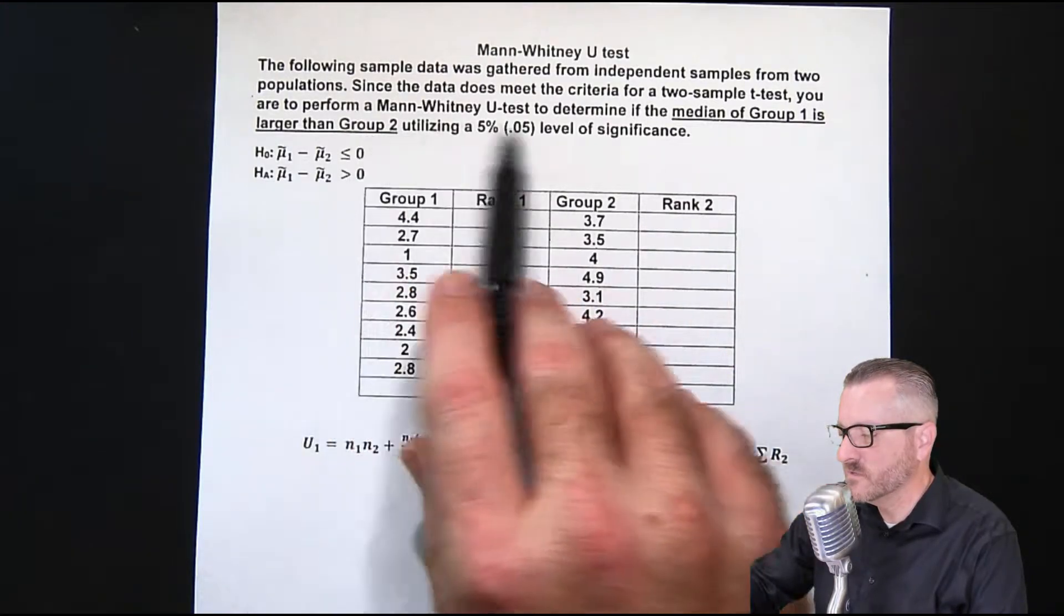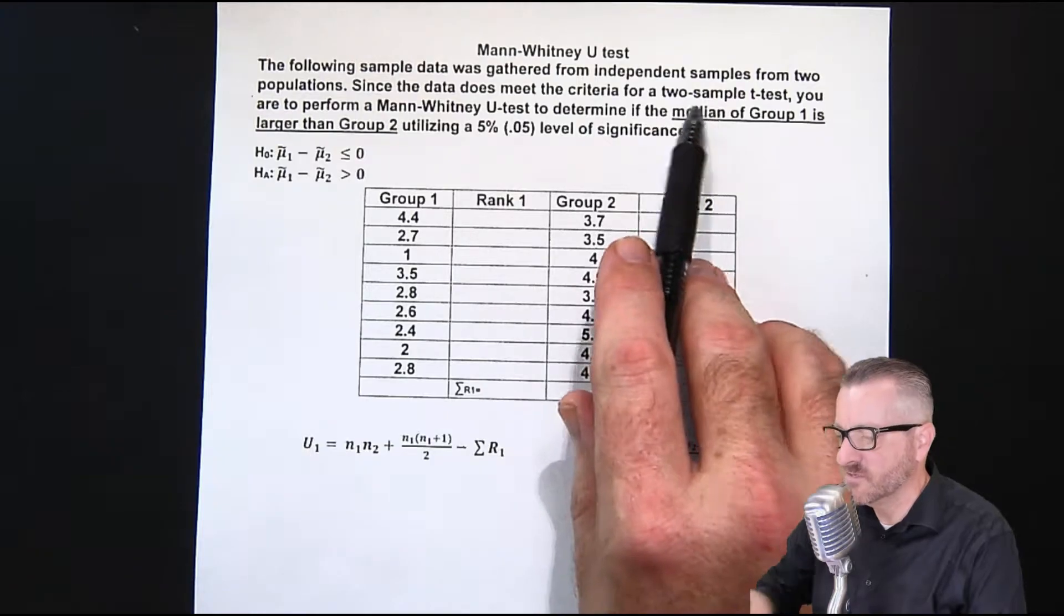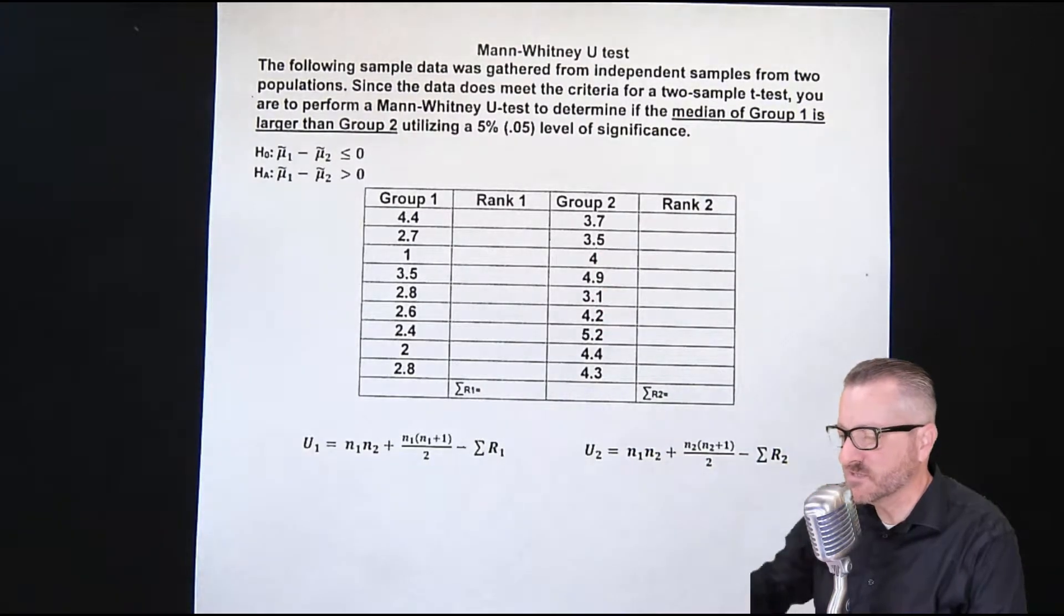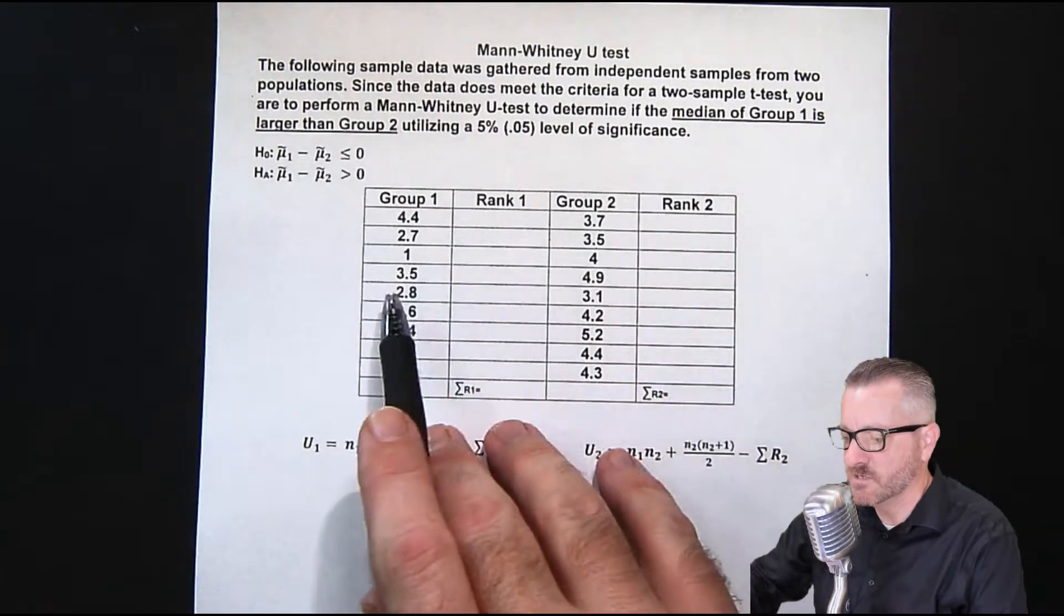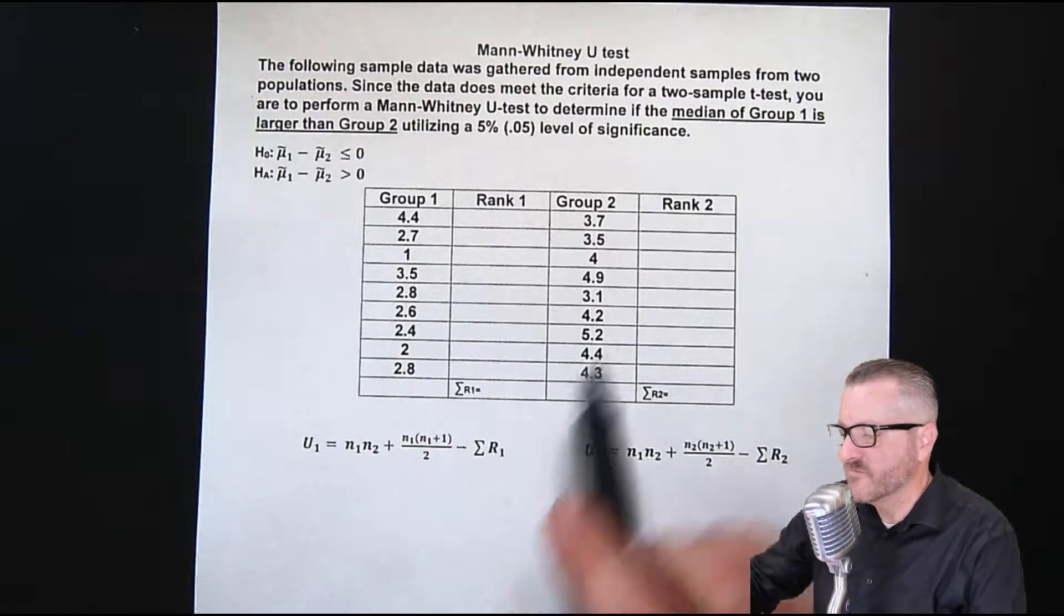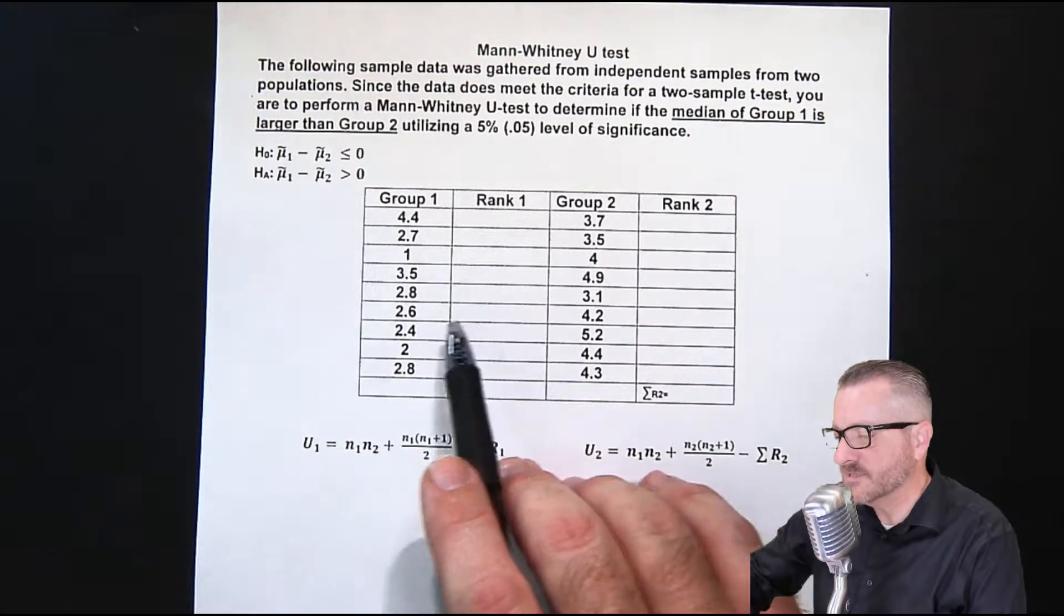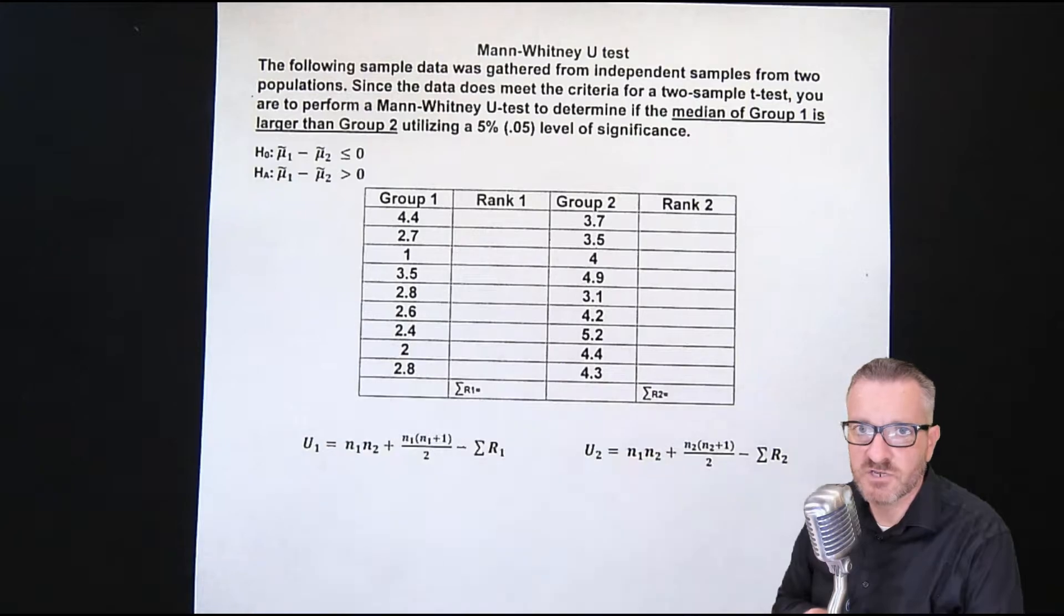So, normally we would do a two-sample t-test, and we've used the t-distribution before, so this is a test where we're comparing two groups to see if there's a difference. So if it was a normal distribution, we'd use this. So the assumption is, this does not follow the normal distribution characteristics.